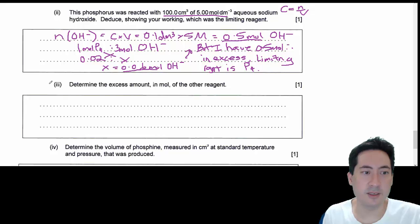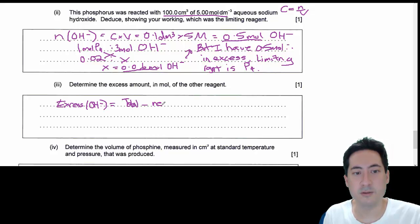Next is how much excess do you have? I'm going to make up a formula and label it so you don't get lost or transcribe the wrong thing. Total minus needed or required. So that's 0.5 minus 0.06, and that gives us 0.44 moles of NaOH left over.